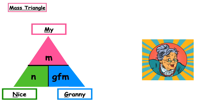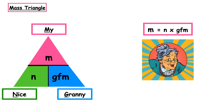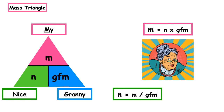We need to be able to manipulate this triangle to get the appropriate formula. If we cover up m when working out mass, n and the GFM are next to one another, so we multiply them: mass = n × GFM. If you wanted to calculate the number of moles, you would cover that up in the triangle and we can see that m is over the GFM, so the formula is n = m ÷ GFM.